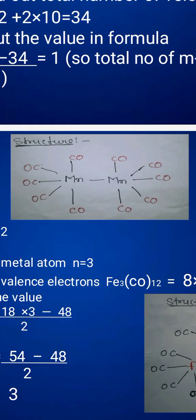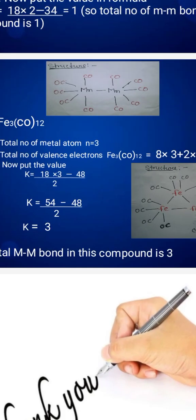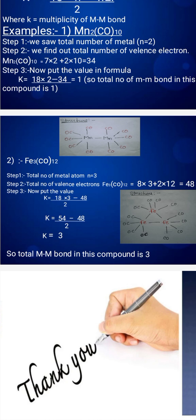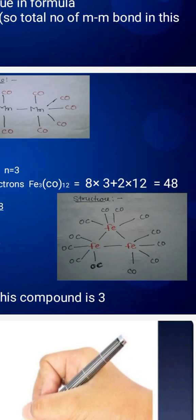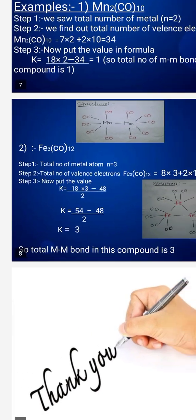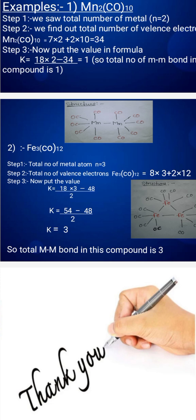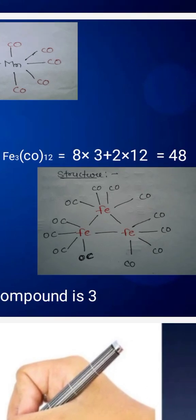The second example is Fe3(CO)12. Step 1: total number of metal atoms is 3. Step 2: find the total number of valence electrons. Fe gives 8 electrons, so 8 times 3 equals 24. CO gives 2 electrons, and 2 times 12 equals 24, total 48 electrons. Step 3: put the values in the formula. K = (18×3 - 48)/2 = (54 - 48)/2 = 6/2 = 3. So the total metal-metal bonds in this compound is 3.